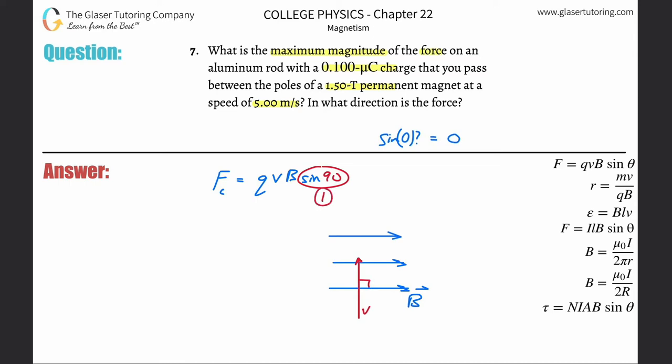Sine will be somewhere between zero and one. So when they're asking for the maximum magnitude of the force, what they're really saying is calculate the force when the angle between the velocity and the magnetic field is 90 degrees. That's what they're asking. In other words, with that armed, with armed with that knowledge, all we now have to do is plug in the values.